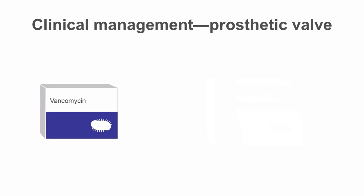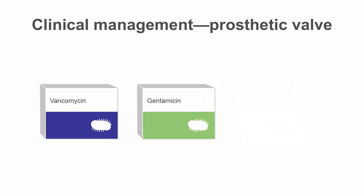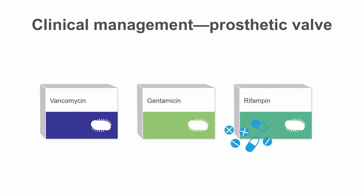For prosthetic valve endocarditis, the combination of vancomycin plus gentamycin plus oral rifampin is recommended because of the possibility of methicillin-resistant Staphylococcus aureus, or MRSA. This combination is also recommended for methicillin-resistant Staphylococcus epidermidis, MRSE. Adjustment of antibiotics can be made by an infectious disease specialist when available.